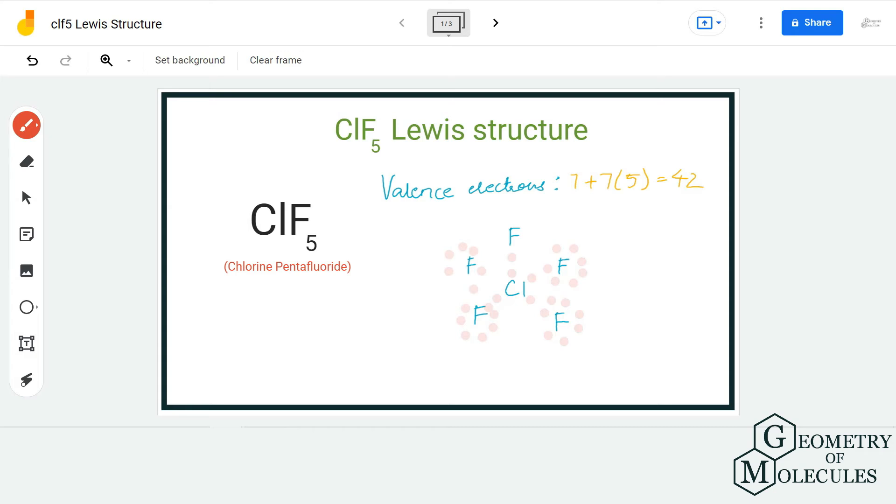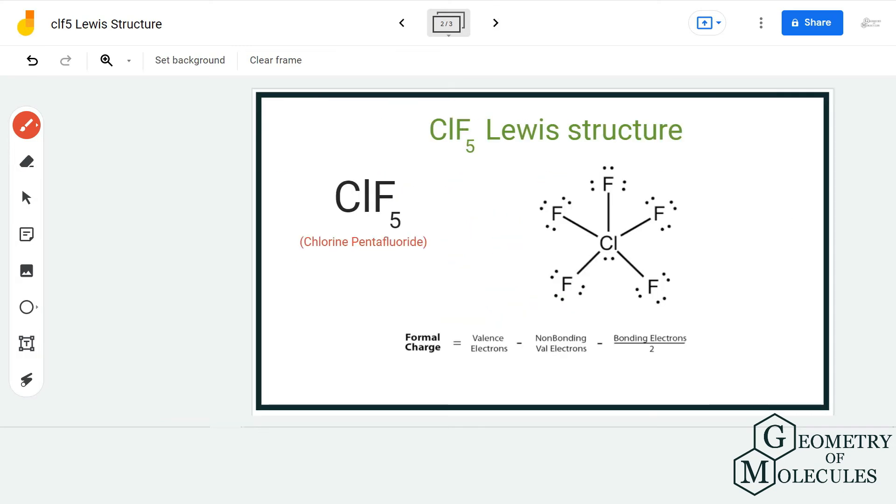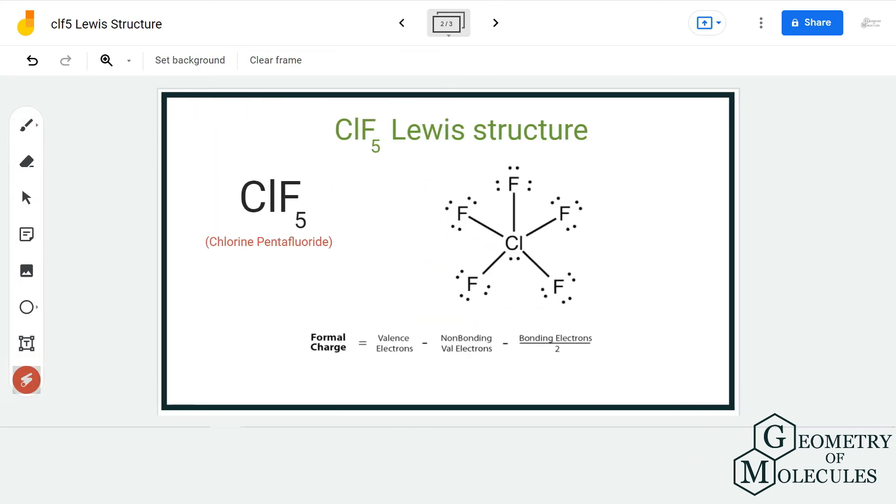The two valence electrons that are left will be placed on the chlorine atom and you might wonder how is that even possible because it already has 10 valence electrons. Well, chlorine can have expanded octets and it can have a maximum of 12 valence electrons in its outer shell. So this is the Lewis structure for ClF5.